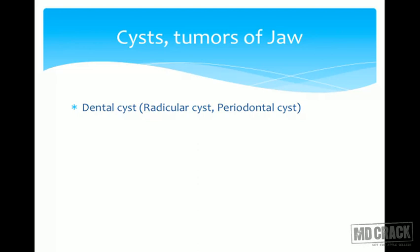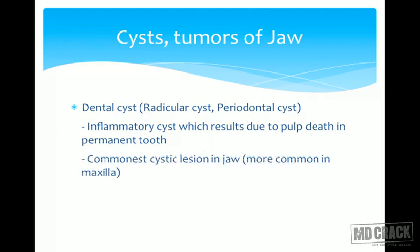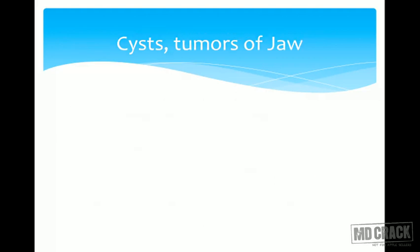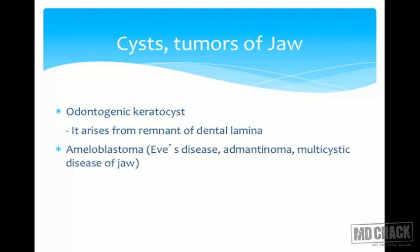Another cyst of the jaw is the dental cyst, also known as radicular cyst or periodontal cyst. It is an inflammatory cyst resulting from pulp death in the permanent tooth. It is the commonest cystic lesion in the jaw, more commonly seen in the maxilla compared to the mandible. Due to cortical thickening, egg-shell cracking is seen on palpation. Another cyst is the odontogenic keratocyst, which arises from the remnant of the dental lamina.